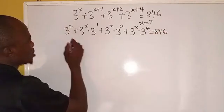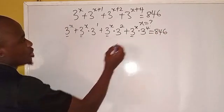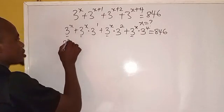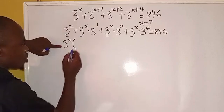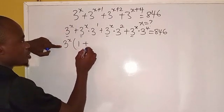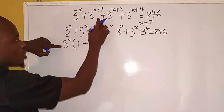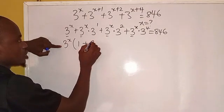So now from here you can see 3 to the power of x is common. So we factorize it out here. 3 to the power of x divided by 3 to the power of x we have 1, plus 3 to the power of 1, we will be left with 3.